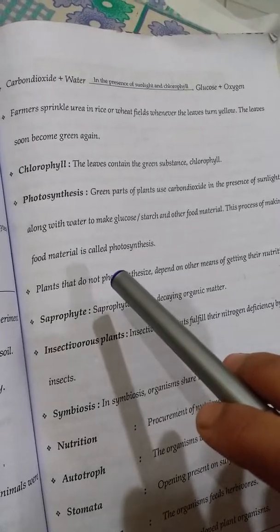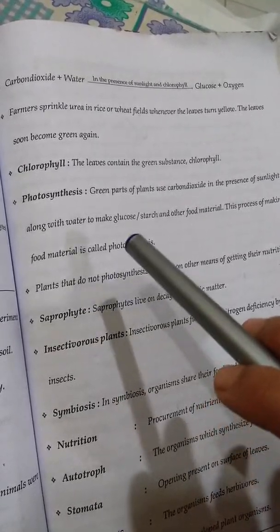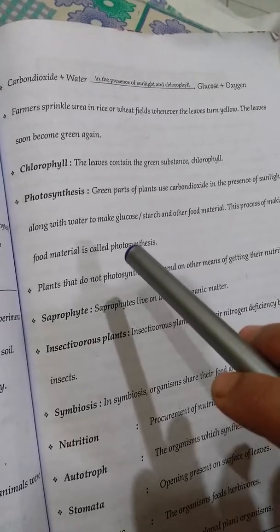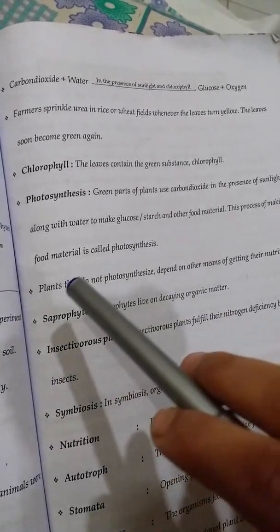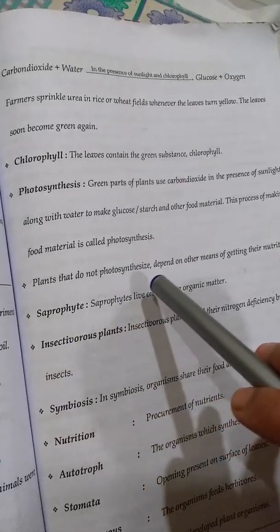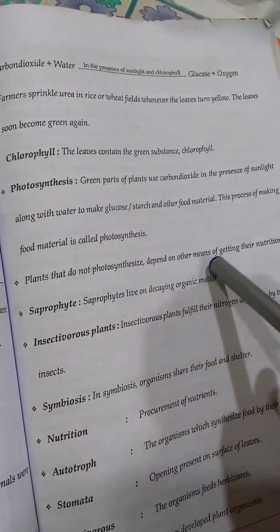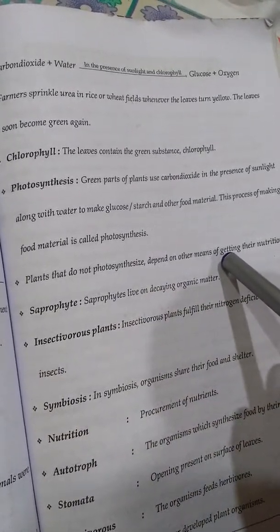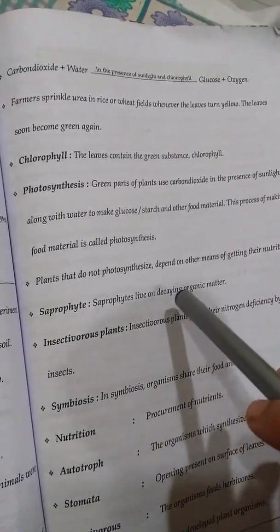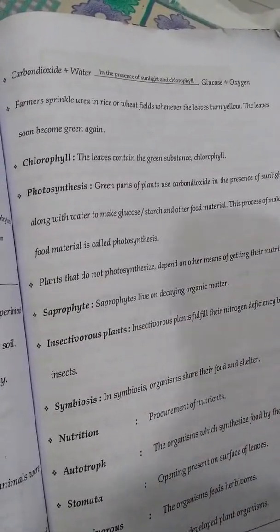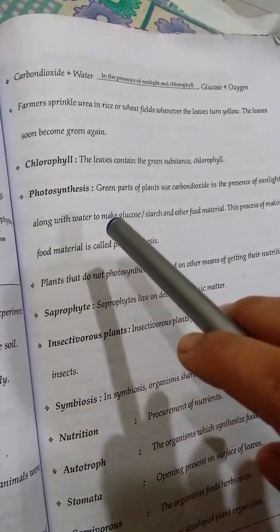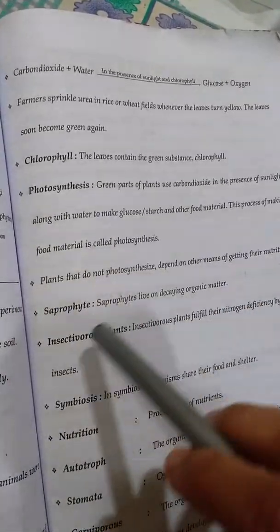Photo means light. So the process is done in the presence of light — this process is called photosynthesis. Plants that do not photosynthesize depend on other organisms for getting their nutrition. Such type of plants are called heterotrophs. They depend on other organisms for preparing food, so they are called heterotrophs.